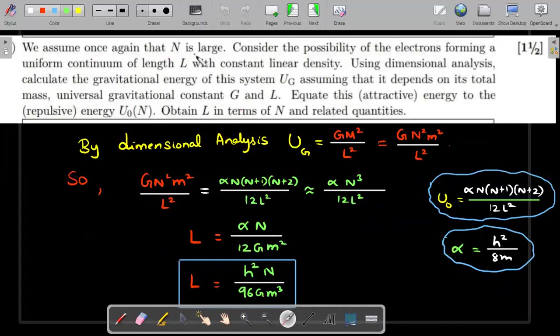Now we assume again N is large. Consider the possibility of electrons forming a uniform continuum of length L with constant linear density. So now he's considering that electrons are like a gas, a continuum in that box. Using dimensional analysis, calculate the gravitational energy of this system U_G assuming that it depends on its total mass, capital G, and L. Equate this energy to the repulsive energy of U_0 of capital N. Obtain L in terms of N and related quantities. He's talking about dimensional analysis asking two energies to be equated.